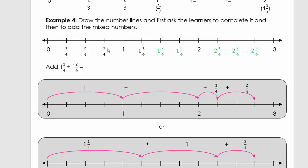Example four is where we add two mixed numbers. We need to add one and one, and we're working with quarters. I already have one and another one marked on the number line. From two to three — because the answer will be bigger than two — I divide that section into quarters. We add the ones together and then add one quarter and another quarter, giving us two and three quarters.